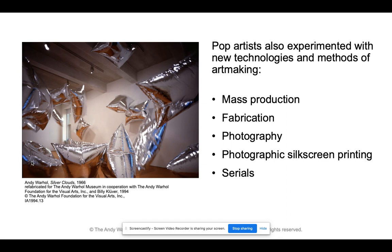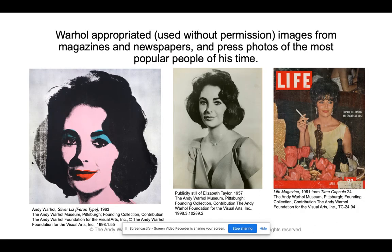Pop artists also experimented with new technologies and methods of art making. They did mass production — recreating one image multiple times — fabrication, photography, and photographic silk screen printing, which is a different way to print photos. Warhol appropriated, meaning he used images without permission from magazines, newspapers, and press photos of the most popular people of his time, and he would recreate them into art.